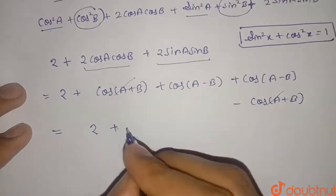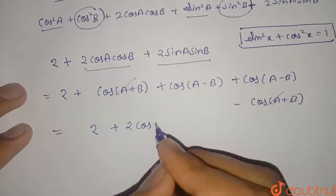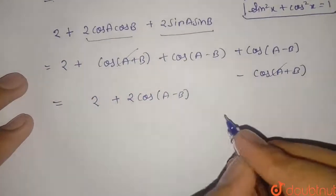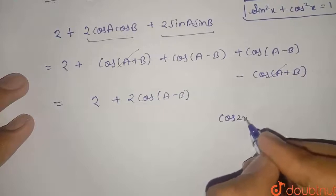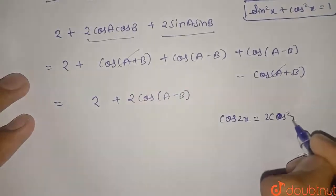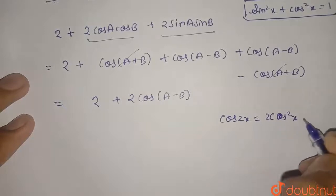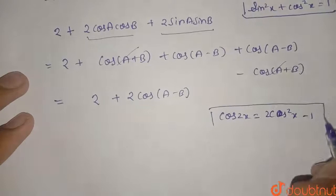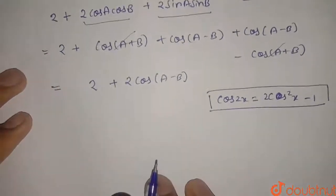Now here I am using the formula of cos 2x. Cos 2x is equal to 2 cos² x - 1. So if I use this formula in this given expression.